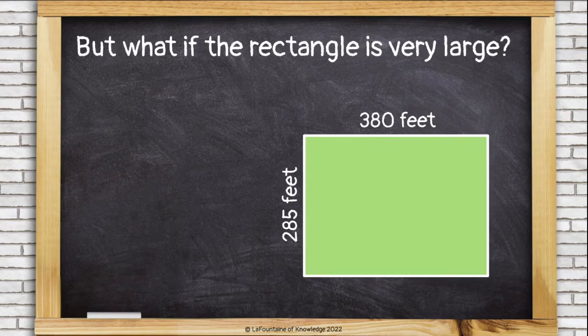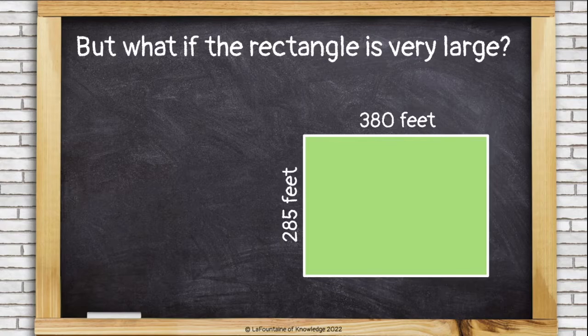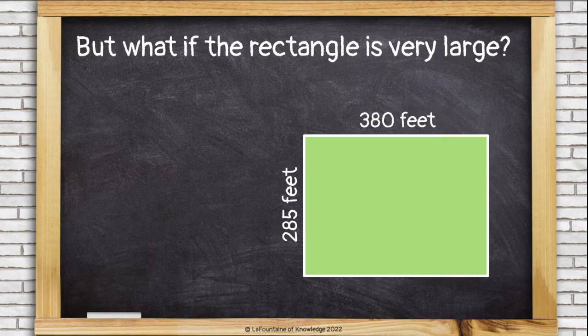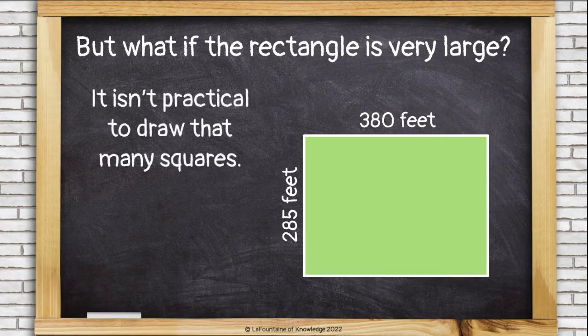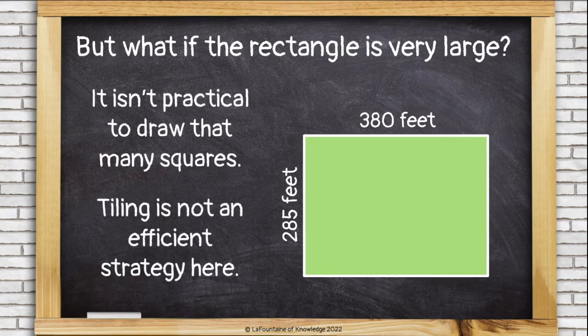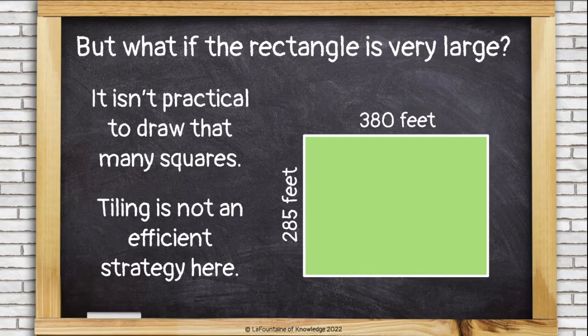But what happens if the rectangle is very large? Look at this rectangle. It's 380 feet long and 280 feet wide. There's no way I can draw that many squares. It isn't practical. Tiling is not an efficient strategy here. We need another way to find the area and perimeter of this rectangle.